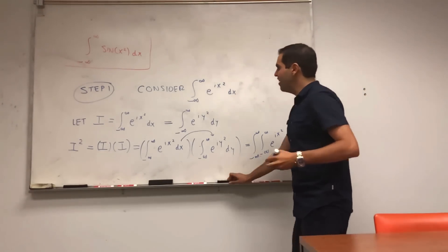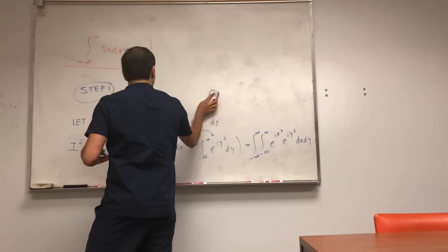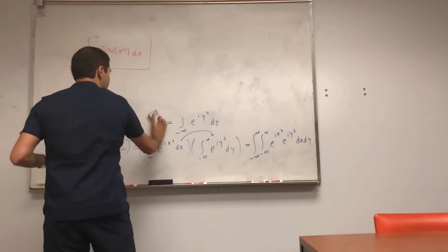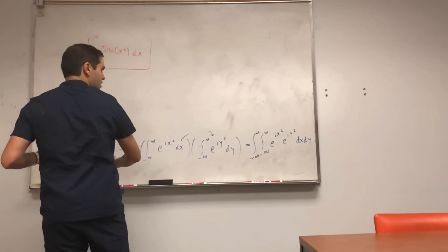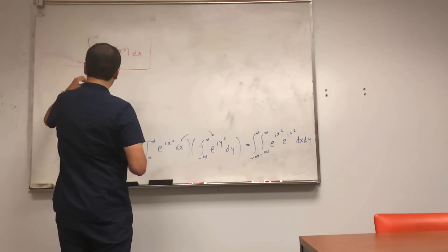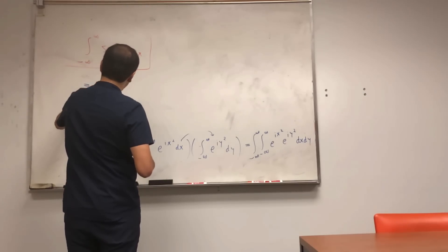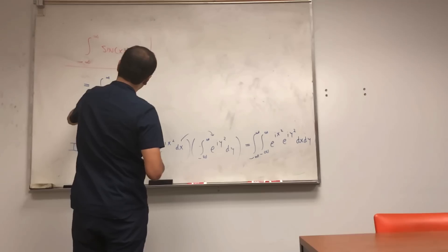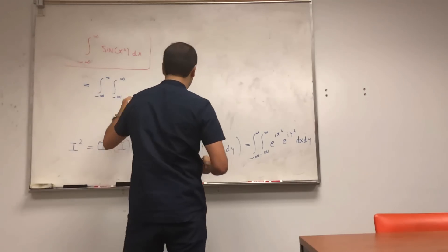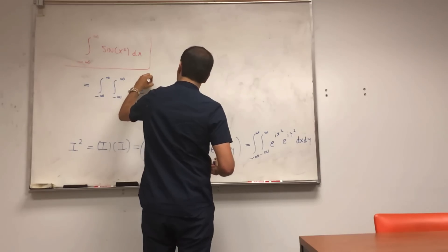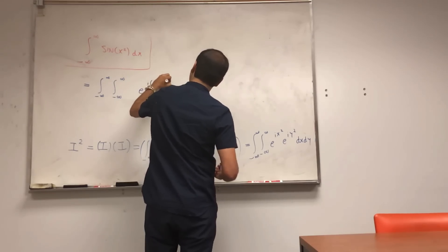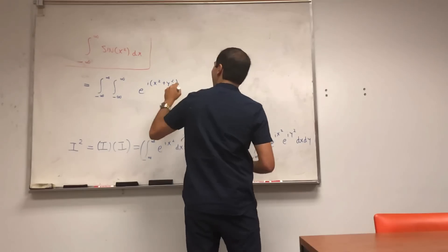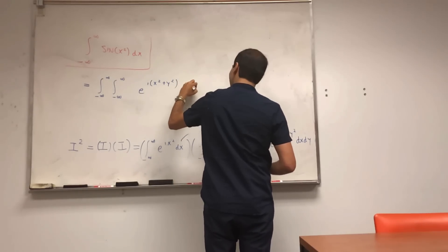And this simplifies nicely. So then, we get the following. So this just becomes integral from minus infinity to infinity, minus infinity to infinity of e to the i, x squared plus y squared dx dy.